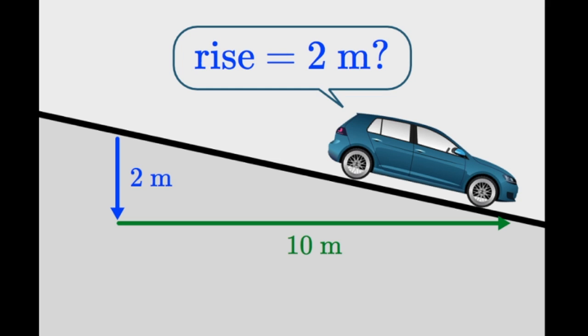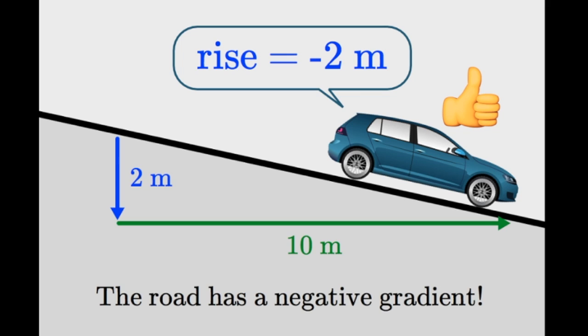First of all, the rise is the vertical distance the car moves through. It travelled 2 meters down from where it started. That's a fall rather than a rise. We need some way to show the rise is actually a fall. This is one case where we need to insert a negative sign. That makes sense because the surface of the road looks like a line with a negative gradient. Did you notice that? Great job if you did.